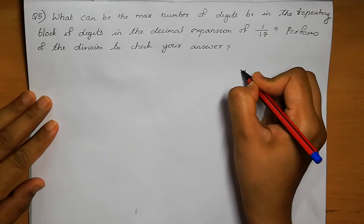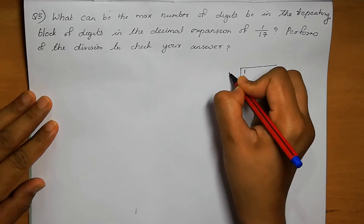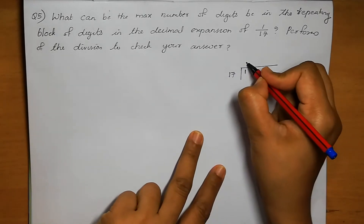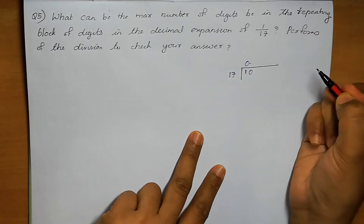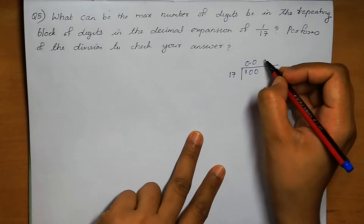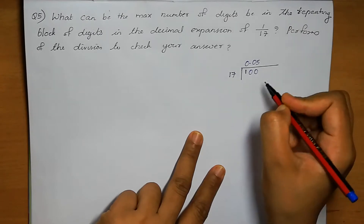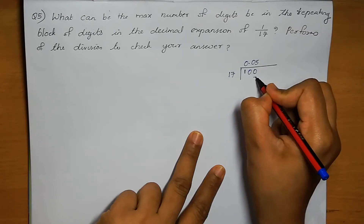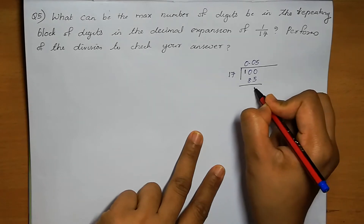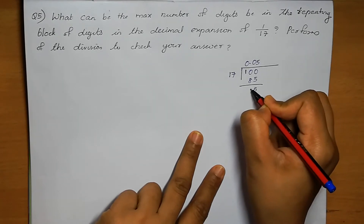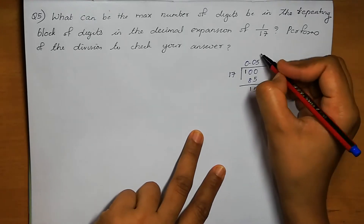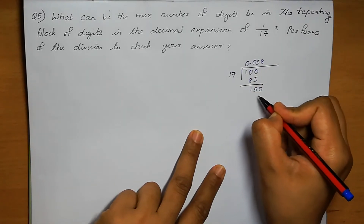1 divided by 17. 0.0 — not possible. One more 0, so 100. In 100, how many times? 5 times. 85. 5, 8, 5, 1. Next digit: 150. In 150, how many times? 8.